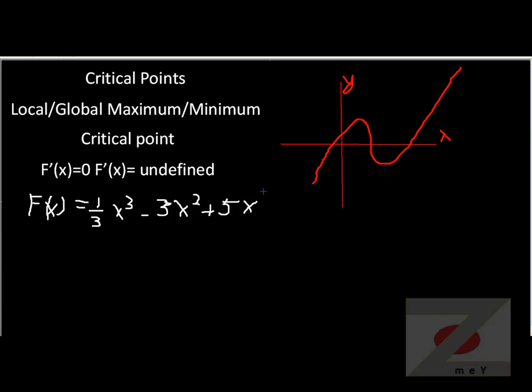And where derivative equals to zero or slope of a function is zero, we have it over here at this point and at this point. These two points, derivative of this function equals to zero. Therefore, this is our critical point.